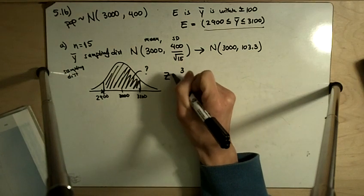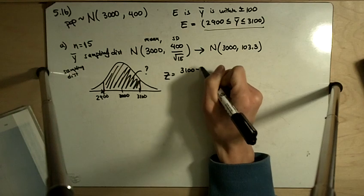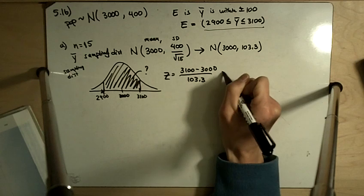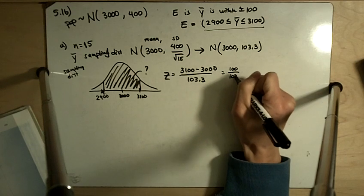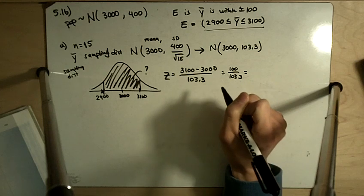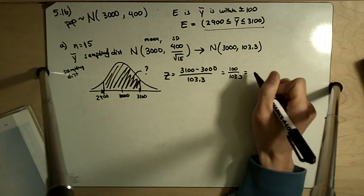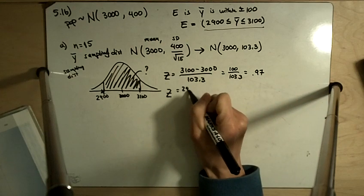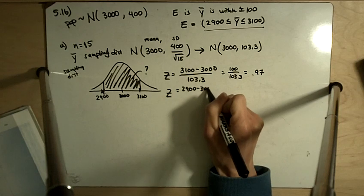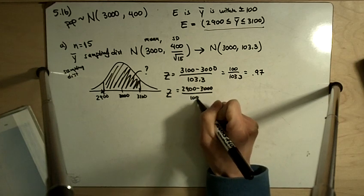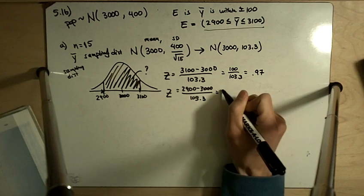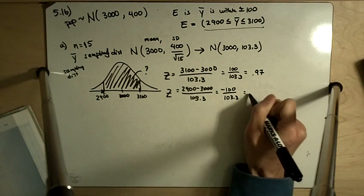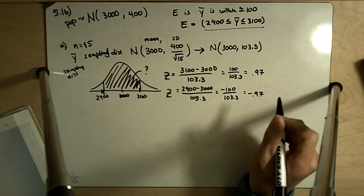We've got z is equal to 3100 minus 3000 divided by our standard deviation, 103.3. And so we get 100 divided by 103.3, and that gives us 0.97. And then doing the opposite, except now 2900 minus 3000. And just because of symmetry, I can already tell you that it's going to be negative 0.97. We'll get negative 0.97.